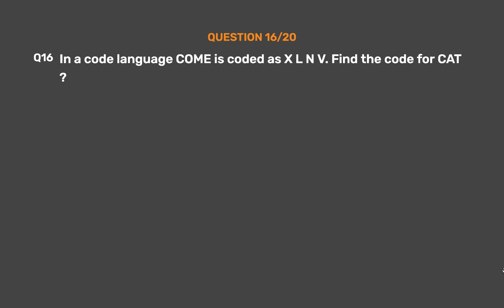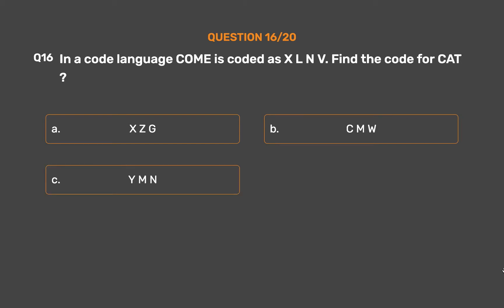Question number 16: In a code language, 'COM' is coded as 'XLN'. Find the code for 'CAT'. Option A: XZG. Option B: CMW. Option C: YMN. Option D: XWG.